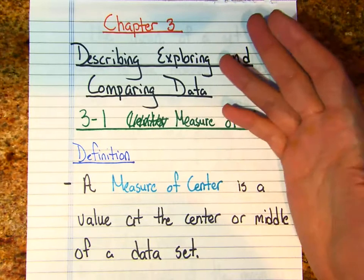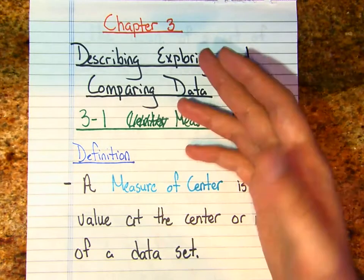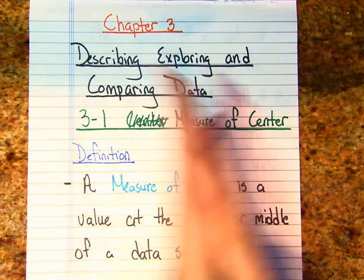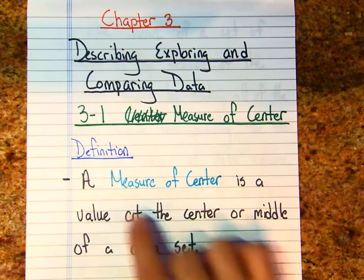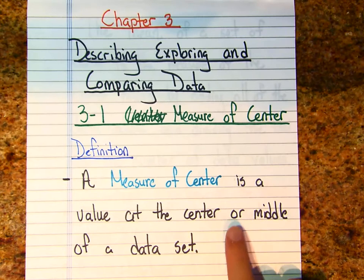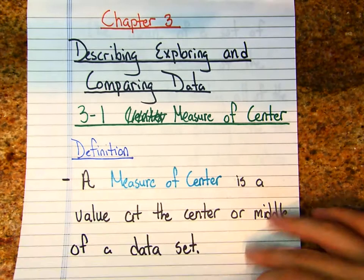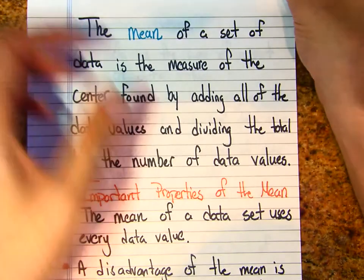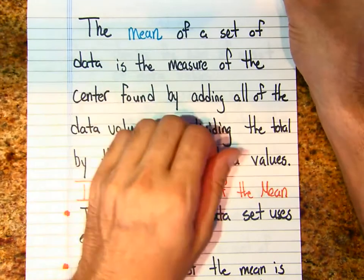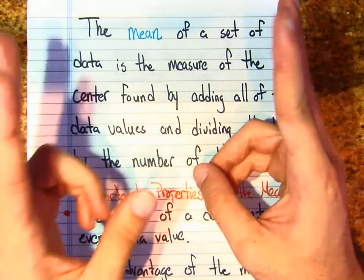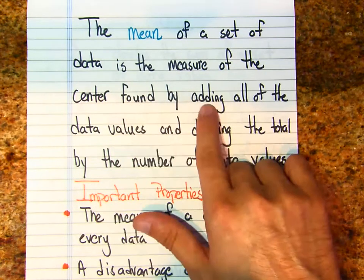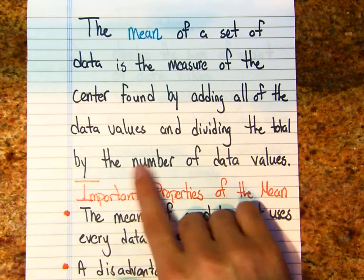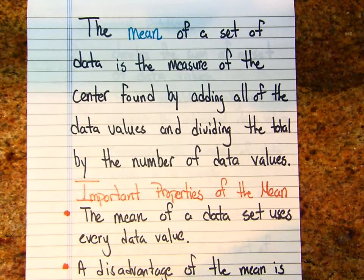For this lesson it will be very note-heavy with some examples, but it should be nice and easy. A measure of center is the value at the center or middle of a data set. We'll show an example very soon. The mean — I'm sure you've heard this word before — is the measure of center found by adding all of the data values and dividing by the total number of data values.